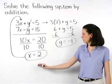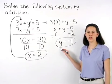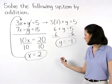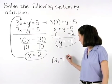So x equals 2 and y equals negative 1. And we can write our answer in the form of the ordered pair, 2, negative 1.